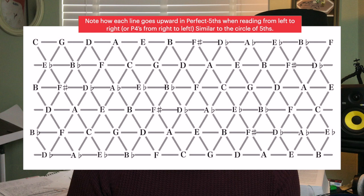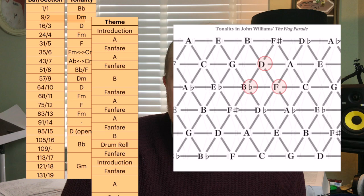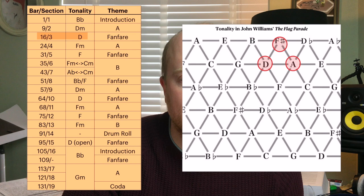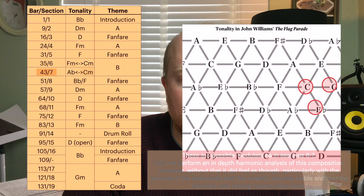A better way to understand and visualise mediant relationships is to use a Tonnetz diagram. A Tonnetz is essentially a linear stratification of the circle of fifths. For instance if we break the circle of fifths and stretch it out into a line and then add offset parallel lines that allow us to form major and minor chords by drawing triangles between adjacent pitches, we get what is known as a Tonnetz diagram. Using a Tonnetz I have created an animation of The Flag Parade's tonal structure, progressing gradually between sections with circles highlighting the tonic chord of each tonal centre. The Tonnetz diagram is also a good demonstration of how close major and minor keys are in terms of voice leading.